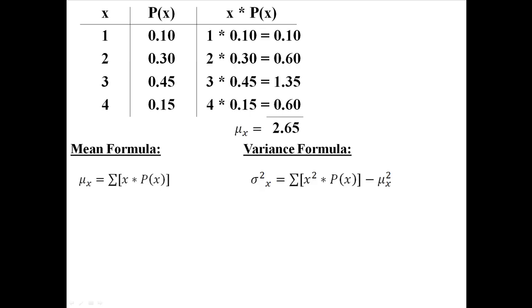Now we have the variance formula, which is this thing right here. Basically variance is the sum of each squared event times the probability of each event minus the mean squared. Which is a lot of words, so I would rather show that to you than tell you. We already know that the mean is 2.65, so we have that done already.